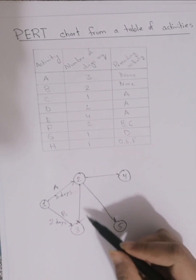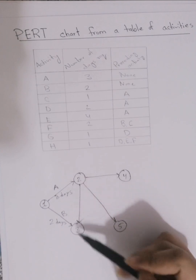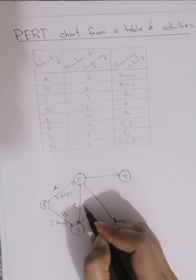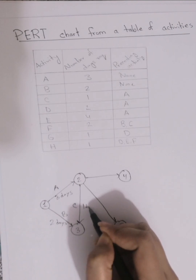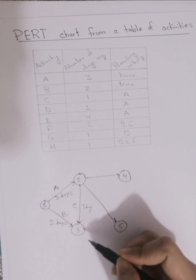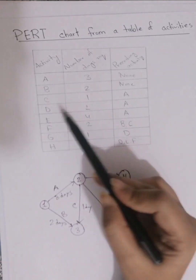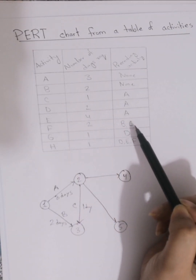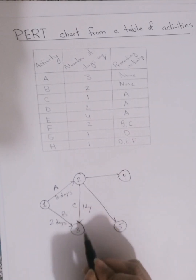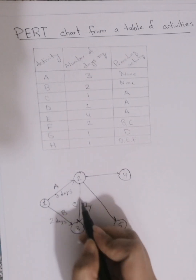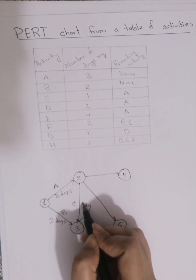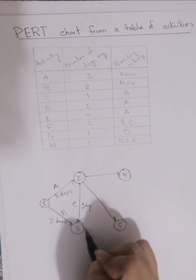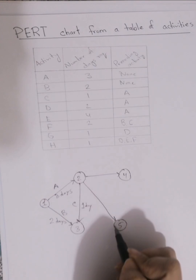Note that activity C has ending node 3. This is because, from the table, we can see that F has two preceding activities: B and C. So we will start F from here. These preceding activities must be completed in order to start activity F.